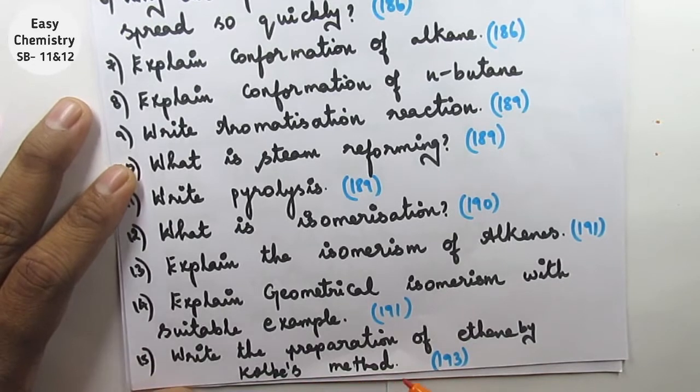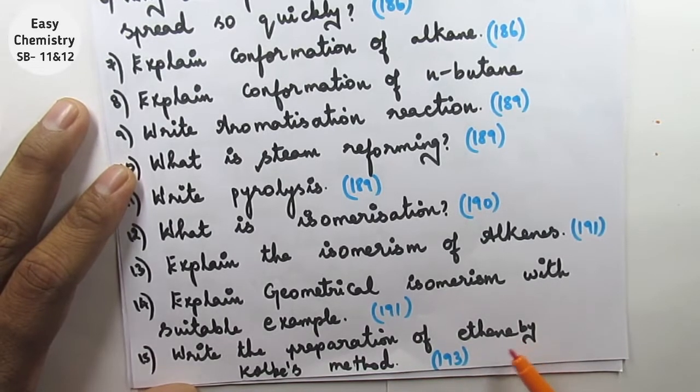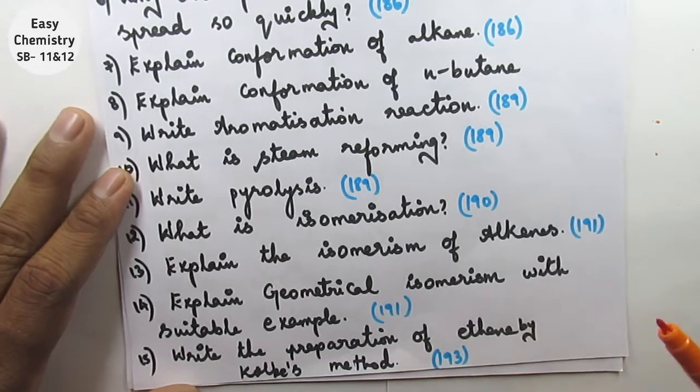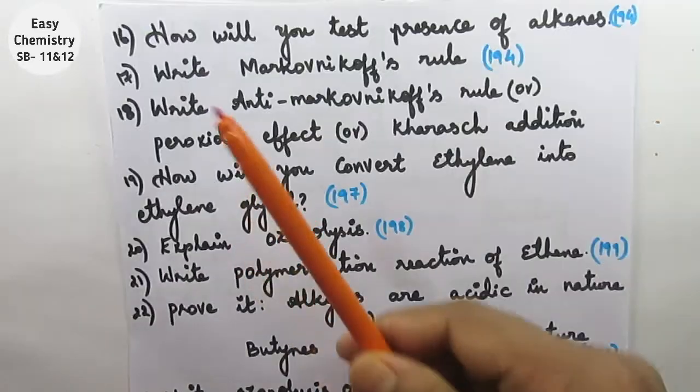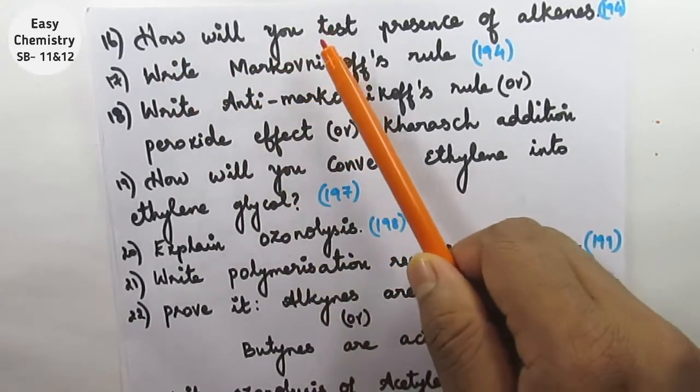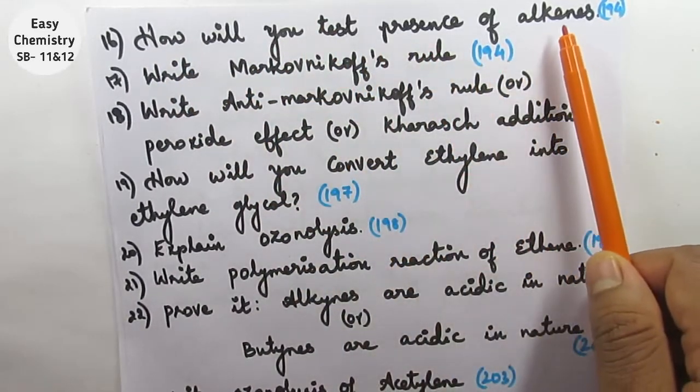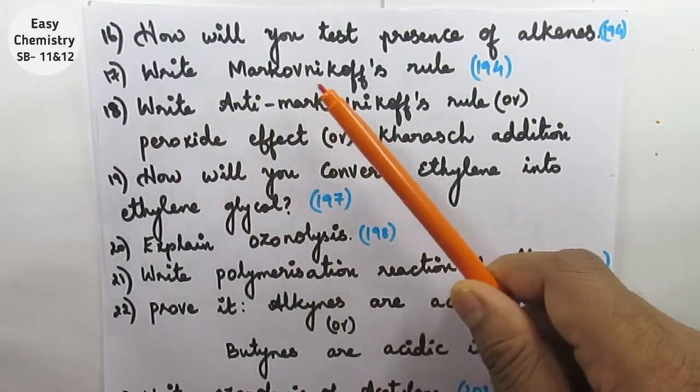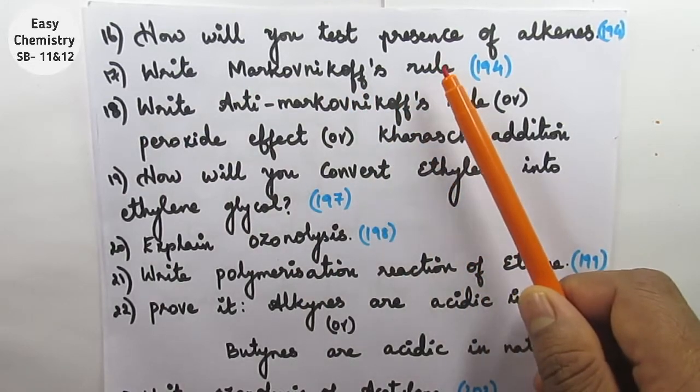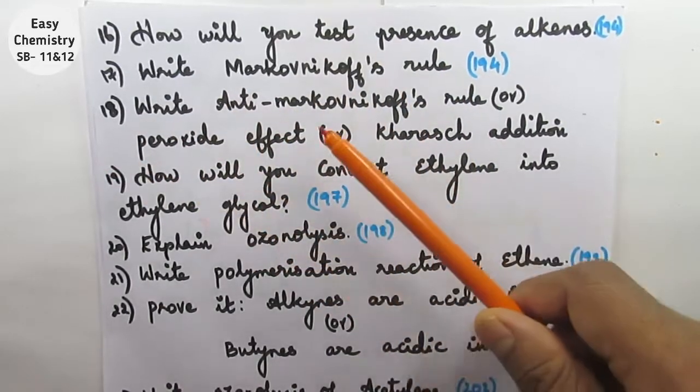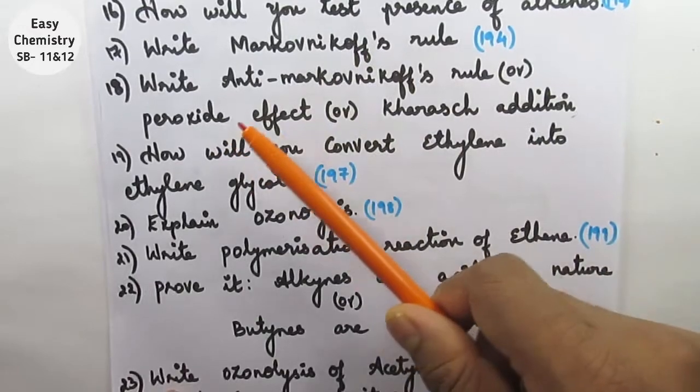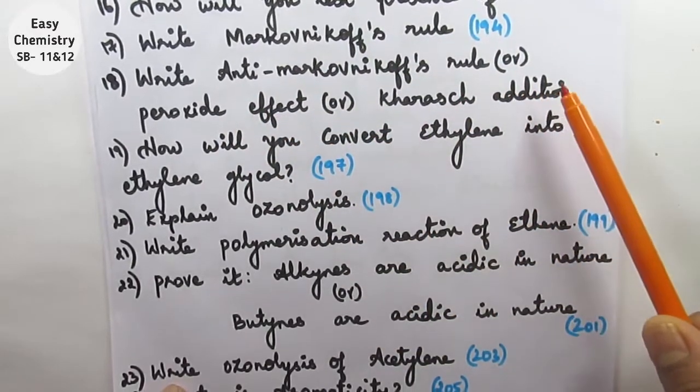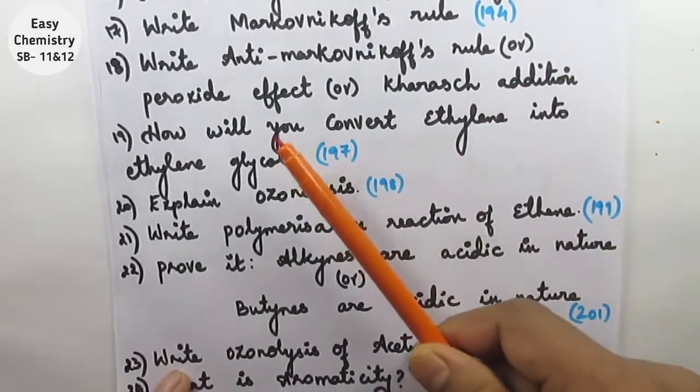Question number 16: How will you test the presence of alkanes? Page number 194. Write Markovnikov's rule. This is very important. Question number 18: Anti-Markovnikov's rule. It is known as peroxide effect or Kharasch addition.